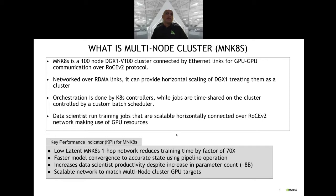When setting up a cluster like this, there is an expectation around KPIs. We need to design low-latency multi-node K8S clusters with a one-hop network to keep the design simple. Instead of running 16 GPUs on one node, if we run 1,400 GPUs we see an improvement of 70x in ML performance. Faster model convergence means faster performance and increased productivity, converging faster with 8 billion parameters. The network needs to be matched to the multi-node cluster GPU targets so it doesn't become a bottleneck.